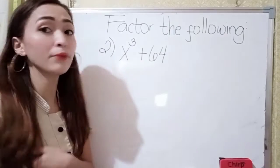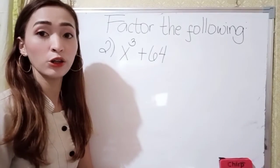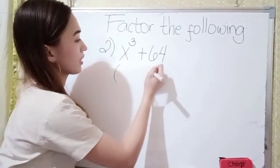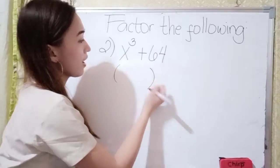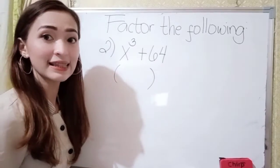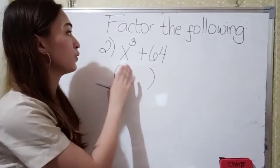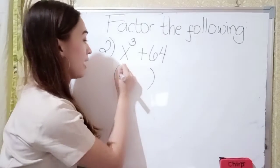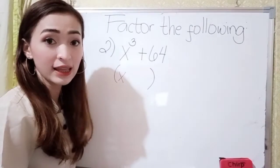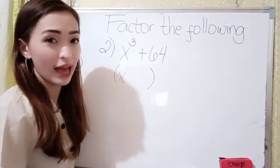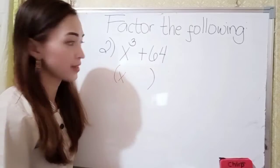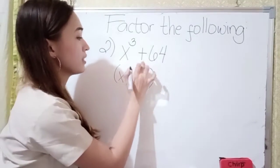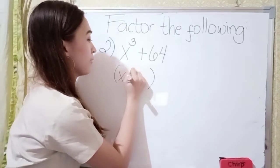For number 2, we have x cubed plus 64. What is the cube root of x cubed? That is x, because x times x is x squared, and x squared times x is x cubed. So, that is x here. This is plus, so write plus here.